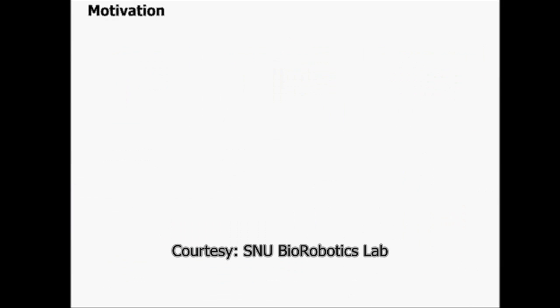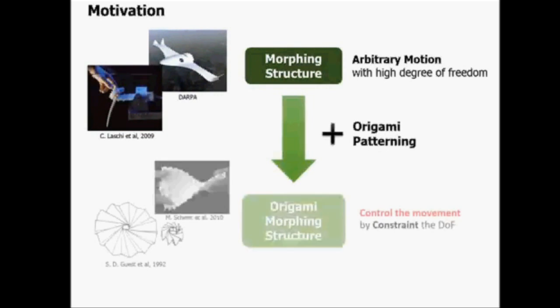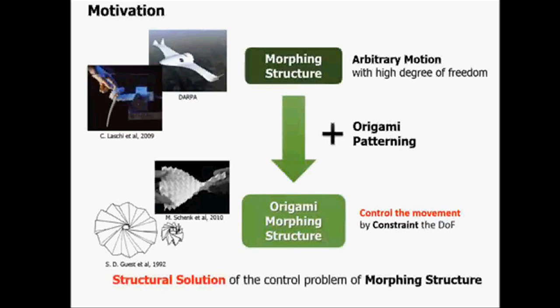Our objective is using this origami concept to make a morphing structure. Generally speaking, a morphing structure has high degrees of freedom. However, if we apply the origami pattern to the morphing structure, we can constrain the degrees of freedom so we can control the movement of the structure. Therefore, the origami structure can be a structural solution to the control problem in morphing structures.